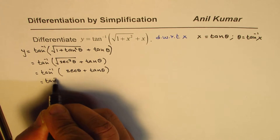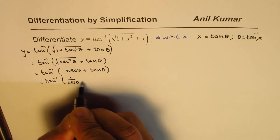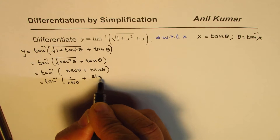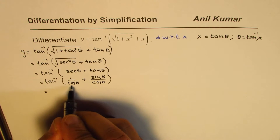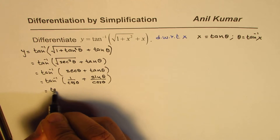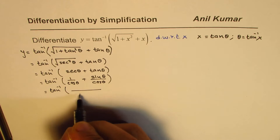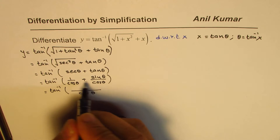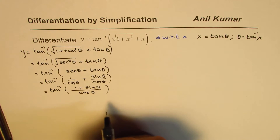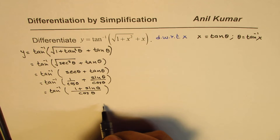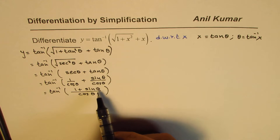The idea now is to convert them to sine and cosine. We write this as 1 over cos theta plus sine theta over cos theta. We can take cos theta as the common denominator, giving us tan inverse of 1 plus sine theta over cos theta. We are still not quite in a form we can easily work with.